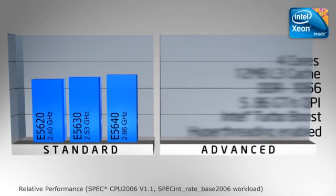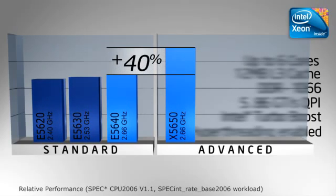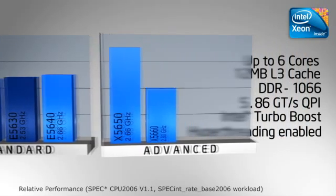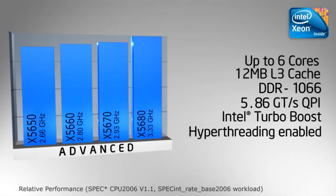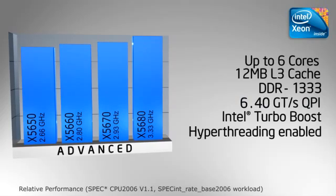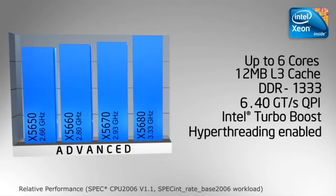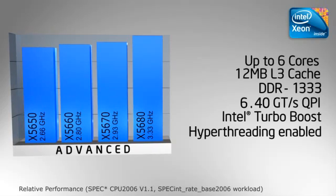The first processor in the advanced segment delivers up to 40% better performance over the best performing processor in the standard segment. For a more diverse market, the advanced segment offers a mix of processor features to meet the demands of advanced bandwidth and compute-intensive applications. With up to six cores, 12 megabyte L3 cache, and the fastest memory and system bandwidth, the advanced segment Intel Xeon processor 5600 series is the choice for performance-oriented customers seeking the highest functionality and optimal server return on investment.